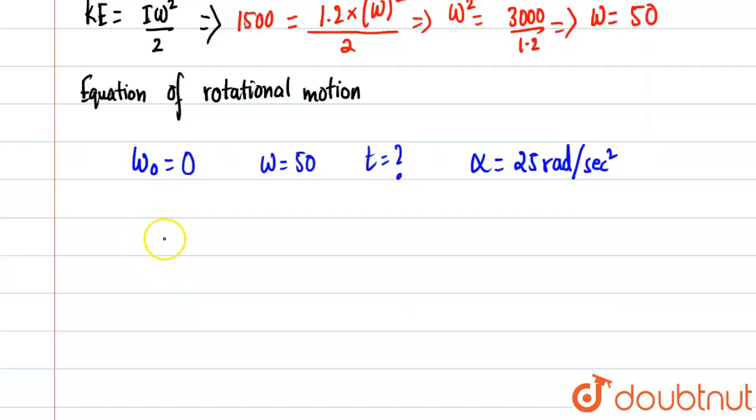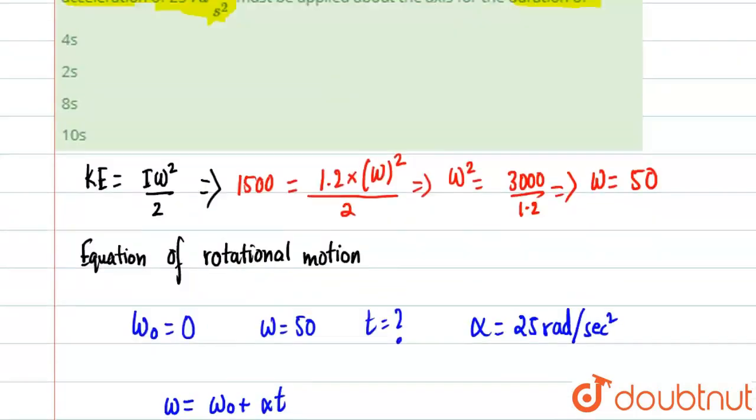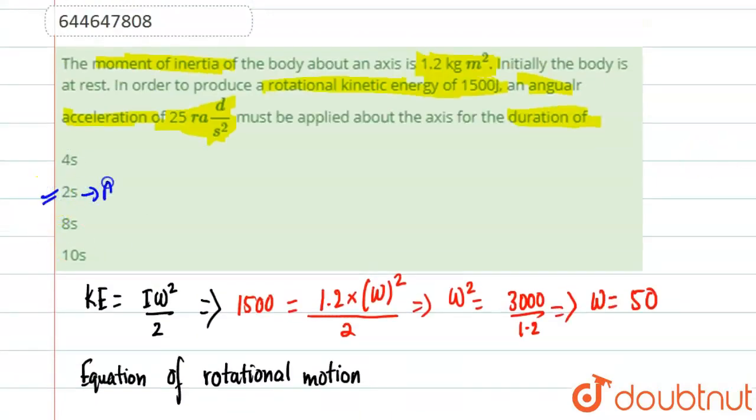We are going to use the first equation of rotational motion, which is omega equals omega naught plus alpha into t. Everything over here we know except t. So 50 will be equal to 0 plus 25 into t. So the value of t will come out to be two seconds. So we got that the value of t was found to be two seconds, and hence our answer is option number b. Thank you.